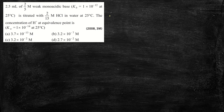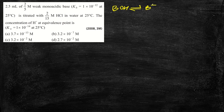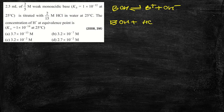If BOH is a weak monobasic base, it dissociates reversibly as B⁺ and OH⁻ — that's why it's weak. When it is titrated with HCl, the reaction is: BOH + HCl → BCl + H₂O.